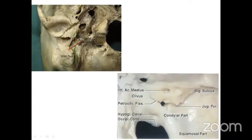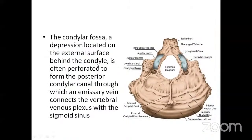The condylar fossa is a depression on the external surface behind each condyle. It is sometimes perforated to form the posterior condylar canal, through which an emissary vein connects the vertebral venous plexus with the sigmoid sinus. The jugular process, a quadrilateral plate, extends laterally from the posterior half of the condyle to form the posterior border of the jugular foramen.